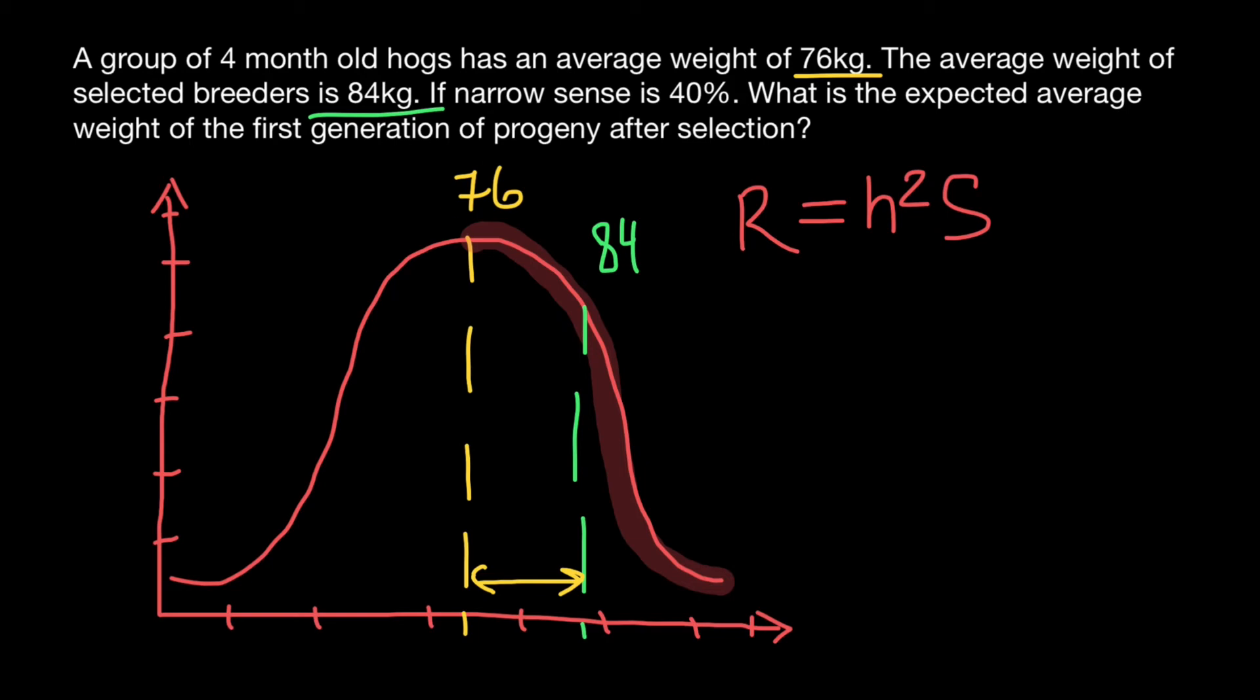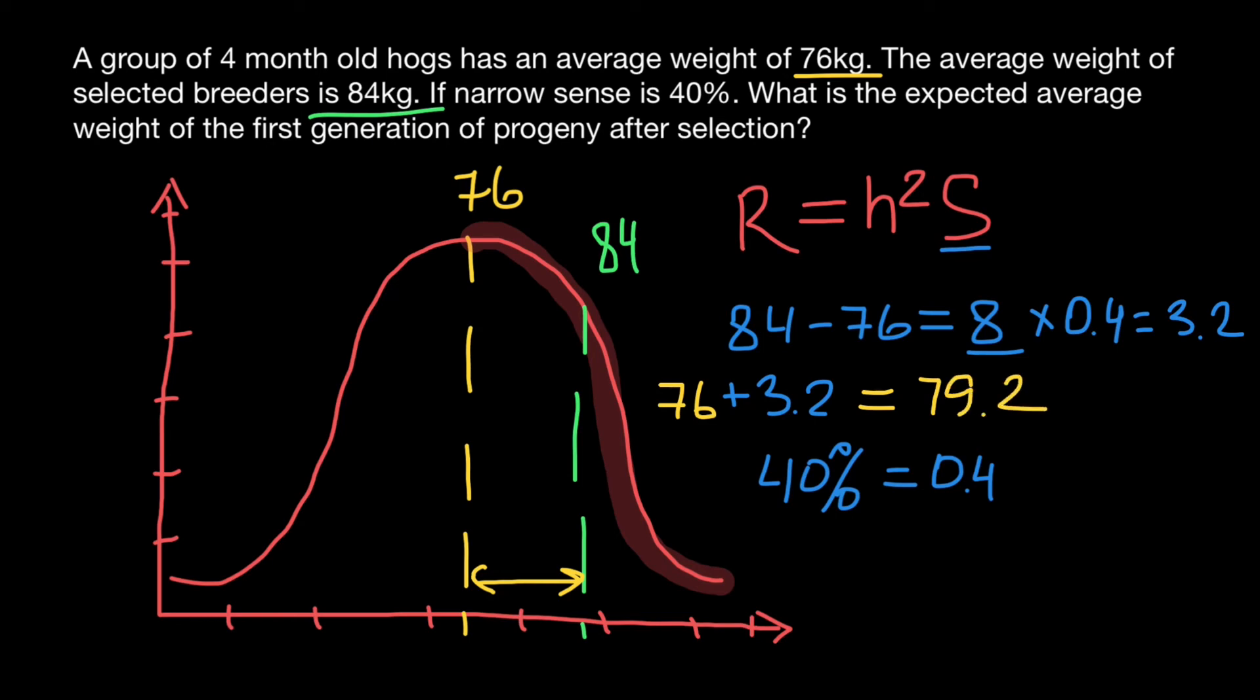Let's do this calculation. So 84 minus 76 would give us 8, so 8 is going to be the selection difference. And we have to multiply by narrow sense heritability, and we know that narrow sense heritability is 40%, or on the scale between zero and one, 40% equals 0.4. So we have to multiply by 0.4, and we are going to get 3.2. So we have plus 3.2 kilograms to the mean of the population. We have to add mean of the population: 76 plus 3.2 would give us 79.2. So let's put this mean here.